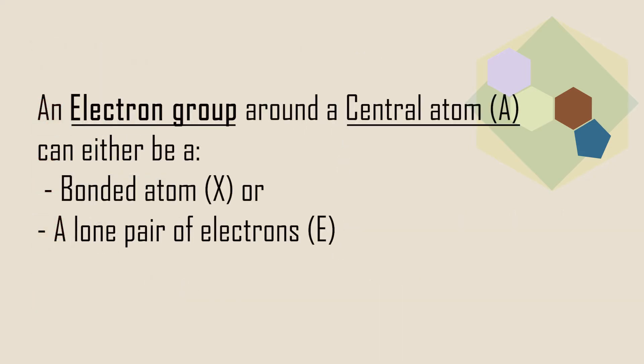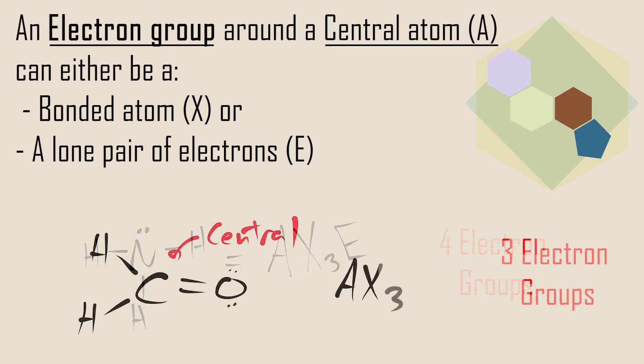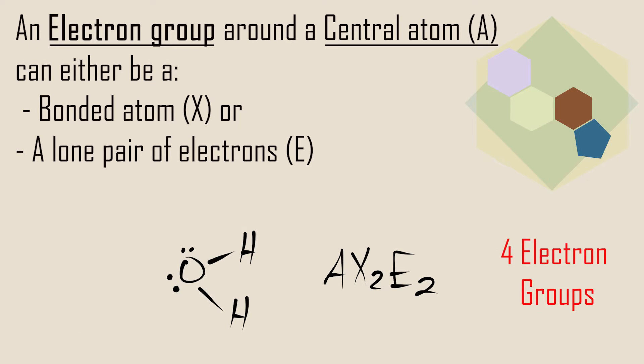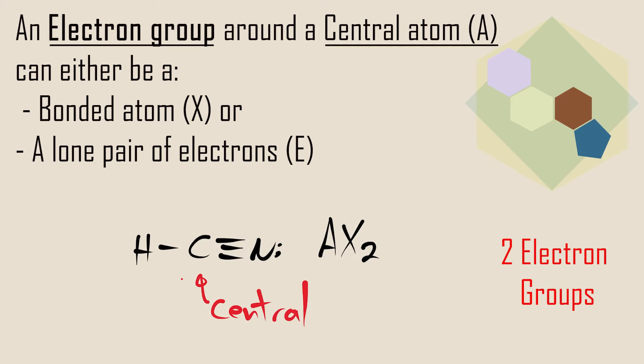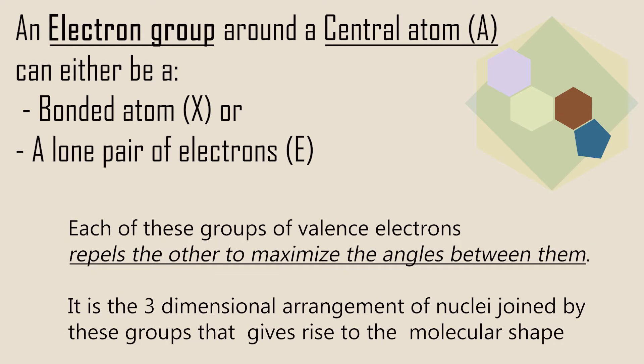A group of electrons can be defined as any number of electrons that occupy a localized region around the atom. An electron group may consist of a single bond, a double bond, a triple bond, a lone pair, or even a lone electron. Each of these groups of valence electrons repels the others to maximize the angles between them. It is the three-dimensional arrangement of nuclei joined by these groups that gives rise to the molecular shape.